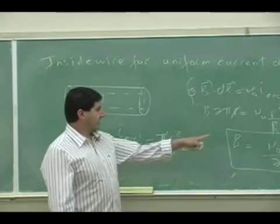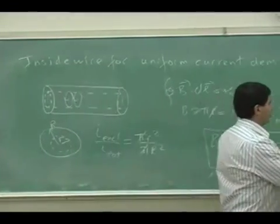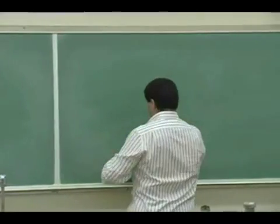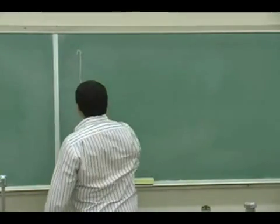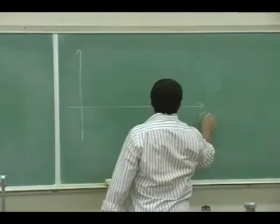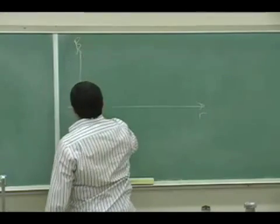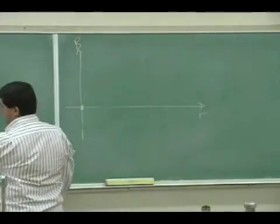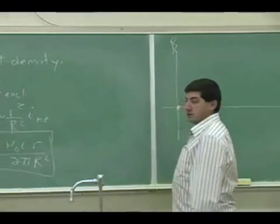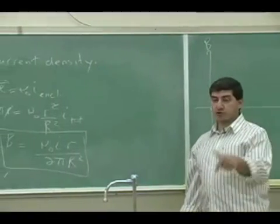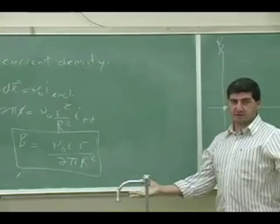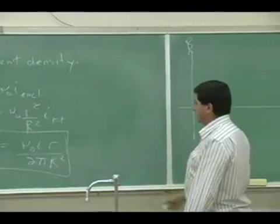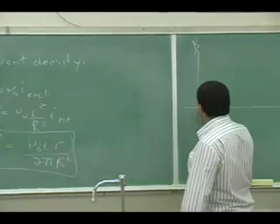So the magnetic field as R goes to zero, the magnetic field is zero, which it should be. You can't go to the center of the wire and still have magnetic field. The center should be zero. And as R gets bigger, it gets linearly bigger.